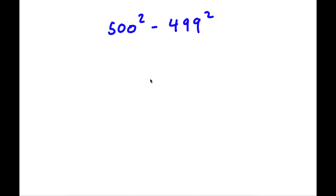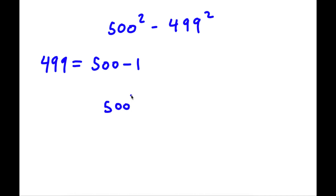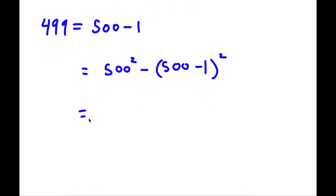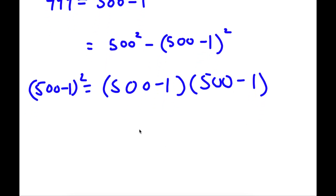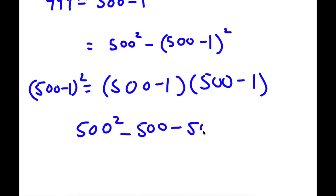Next: 500 squared minus 499 squared. Now 499 is equal to 500 minus 1. So if I replace 499 with 500 minus 1, I get 500 squared minus (500 minus 1) squared. Now (500 minus 1) squared is the same as (500 minus 1) times (500 minus 1). So now I have 500 squared minus (500 times 500 minus 500 minus 500 plus 1).